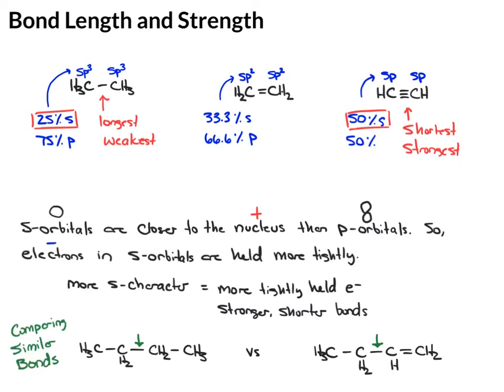What you can do is look at the hybridization of the carbons to figure out the orbital overlap. So in this first one, both carbons that make up the bond are sp3 hybridized.